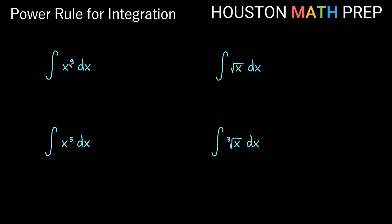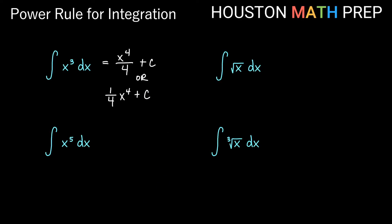We have the integral of x cubed dx. The first thing I will do is add one to my power, giving us x to the fourth, and then divide by my new power — so we get over four, plus c. Or if you prefer, you can write one-fourth x to the fourth plus c. Either of those is a good answer.